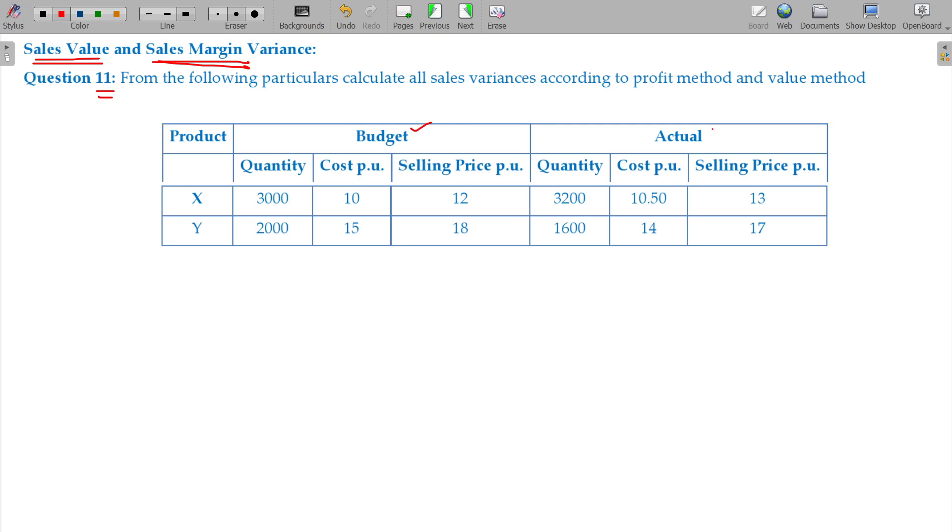We have budgeted and actual data. Products X and Y with their quantities. For the budget: 3000 units of X with sale price being 12 rupees, and 2000 units of Y with sale price 18 rupees.